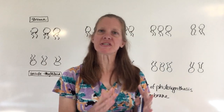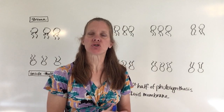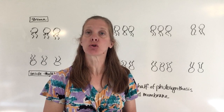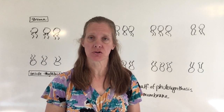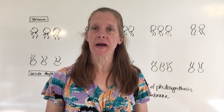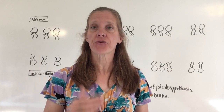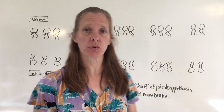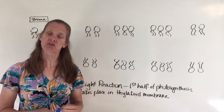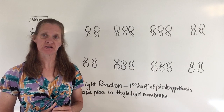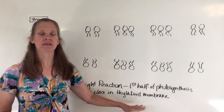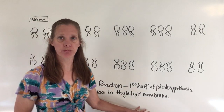Today we're going to take a first deep dive into what photosynthesis looks like, what the process actually looks like. Photosynthesis is divided into two pieces, and the first piece we're going to talk about is the light reaction. It's really the first half of photosynthesis, and the light reaction takes place in the thylakoid membrane.